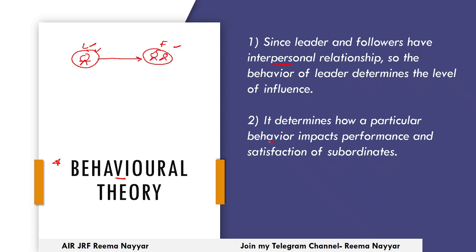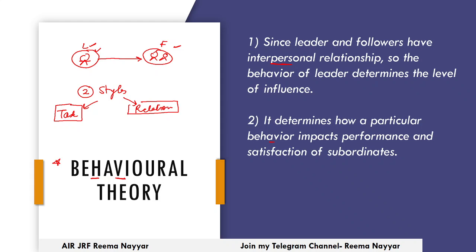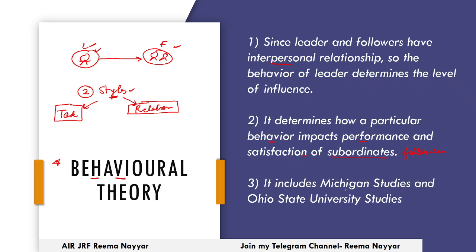It determines how a particular behavior impacts the performance and satisfaction of subordinates. Whenever you read behavioral theory, always keep two leadership styles in mind: first is Task-Oriented Leader, whose focus is only on getting work done, and second is Relationship-Oriented Leader, whose focus is only on his employees. These are two extremes. It also includes Michigan Studies and Ohio State University Studies.